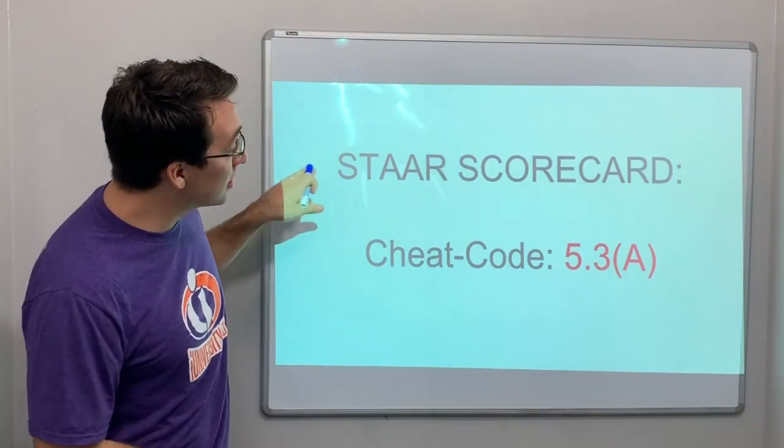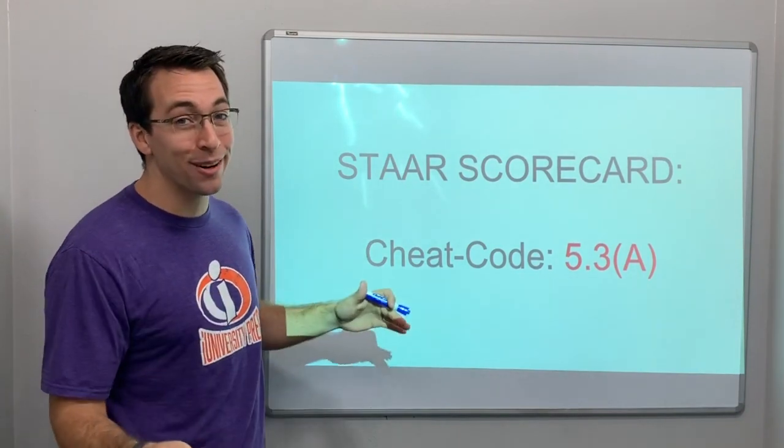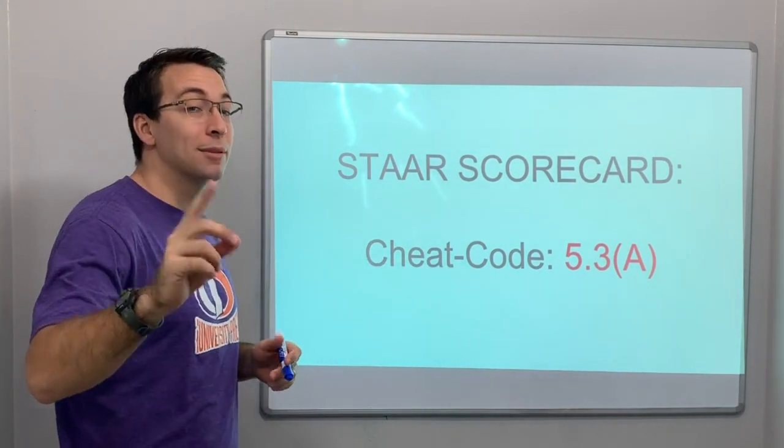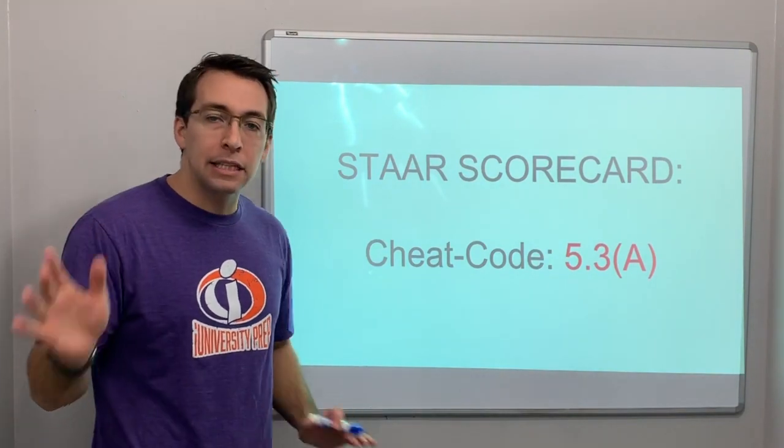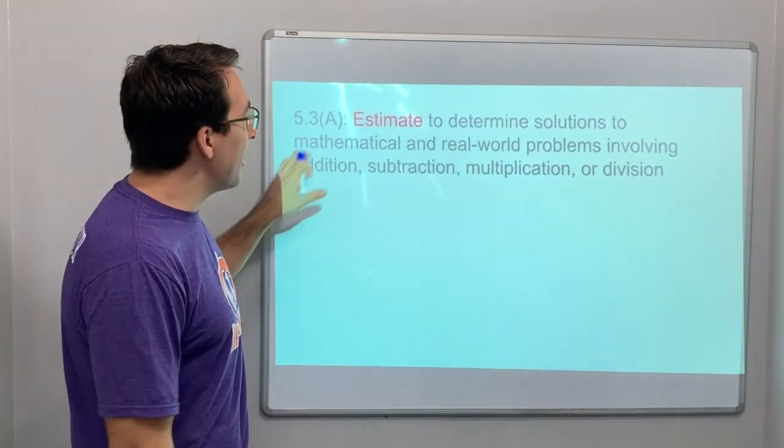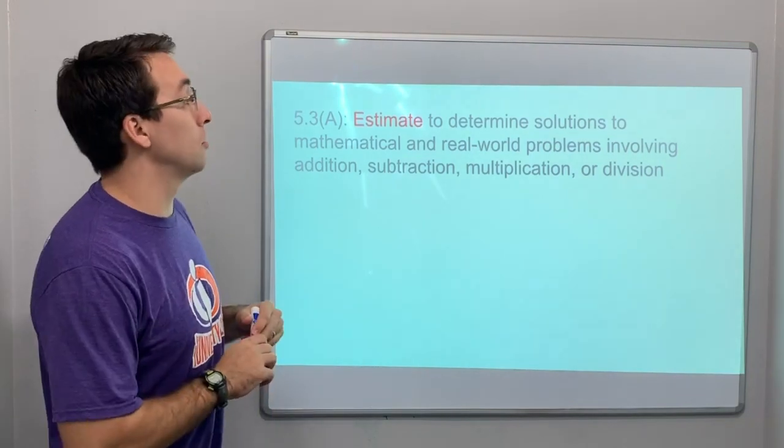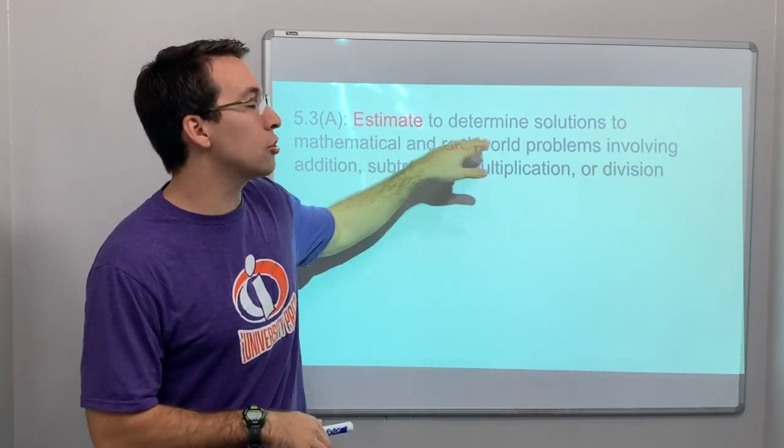Hey friends, today STAAR Scorecard—one time I'm going to be able to say that right—STAAR Scorecard Cheat Code 5.3(A). This cheat code is about estimating again, but instead of estimating decimals, it's just estimating to determine solutions.